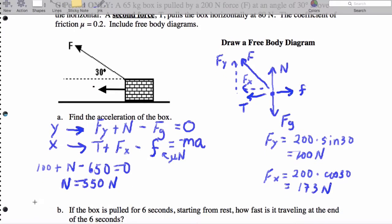Now, we can get the friction force from that. That's going to be friction is 0.2 times 550. That's going to give me 110 newtons.